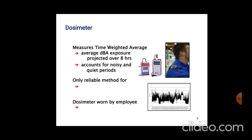The Dosimeter measures time-weighted average decibel exposure over eight hours. It accounts for both noise and quiet periods throughout the workday. It is the only reliable method for measuring individual worker noise exposure, and is worn by employees during their work shift.